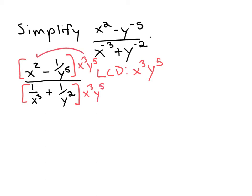So I'm going to distribute x cubed y to the fifth to each of these terms. I'll write this out the long way: x squared times x cubed y to the fifth minus 1 over y to the fifth times x cubed y to the fifth, all over the denominator terms, and you get the idea.